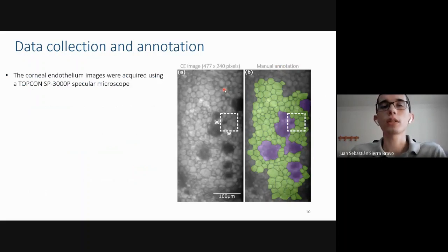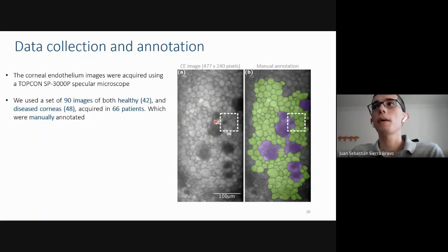The cornea endothelium images used in this research were acquired using a Topcon SP 3000P specular microscope. A manual process was made to annotate each image to segment manually the cells and the gutta. In this example, the green color corresponds to cells and the violet color corresponds to diseased regions. In this research we used a set of 90 images of both healthy and diseased corneas acquired in 66 patients, which were manually annotated.